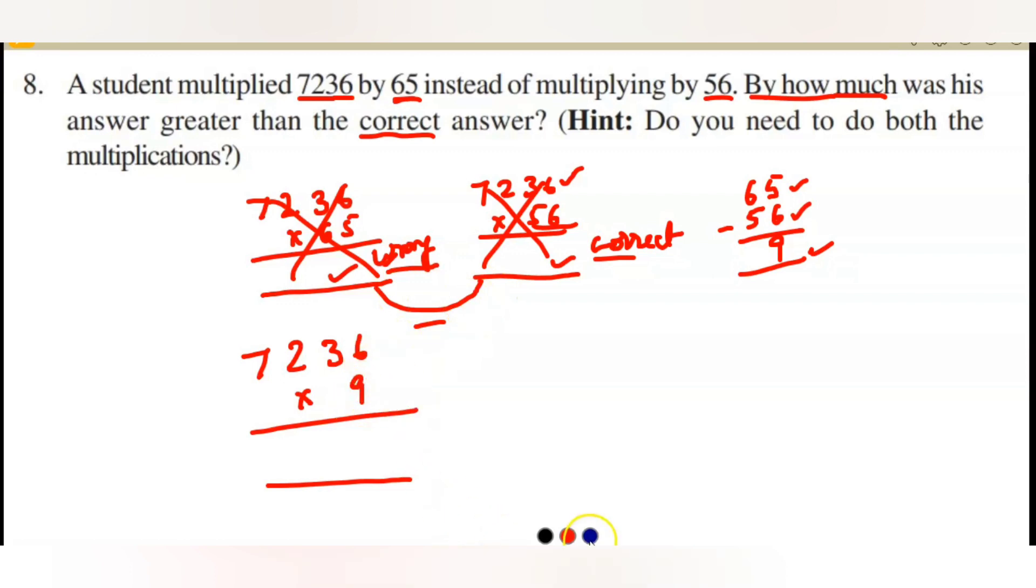9 times 6, just multiply these two things. 9, 6 are 54. 9, 3's are 27 plus 5, 32. And 9, 2's are 18 plus 3, 21. And 9, 7's are 63 plus 2, 65. So the answer is 65,124. The difference between the correct answer and the wrong answer is 65,124.